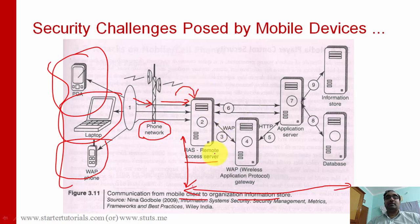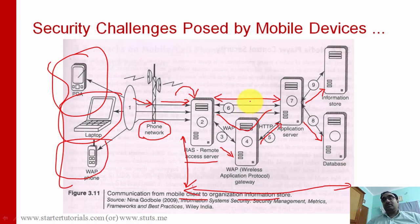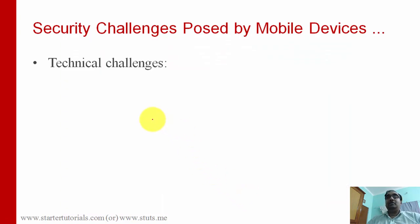The request reaches the remote access server, which then forwards it to the WAP Gateway — Wireless Application Protocol Gateway. This gateway forwards the request to the application server where the application or website is hosted. The application server, based on the request, accesses data from either a database server or retrieves files from a file server — the information store. The remote access server can also communicate directly with the application server after authentication is completed.